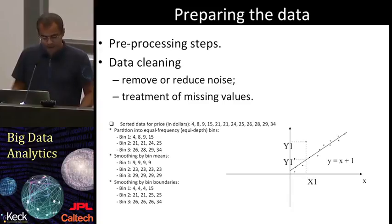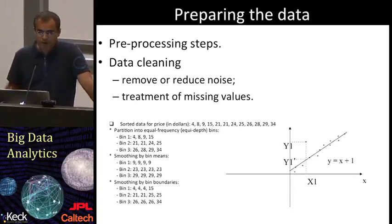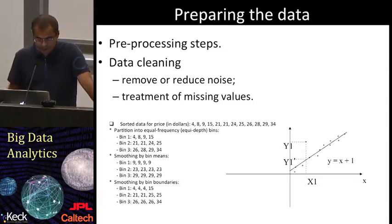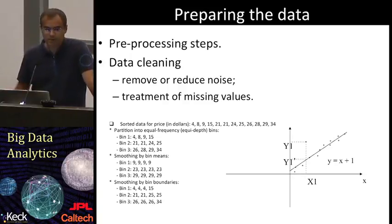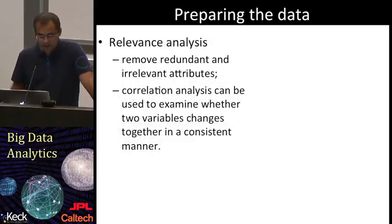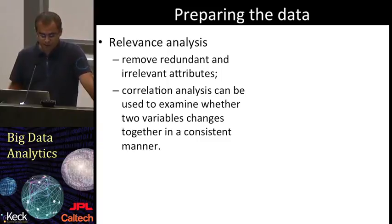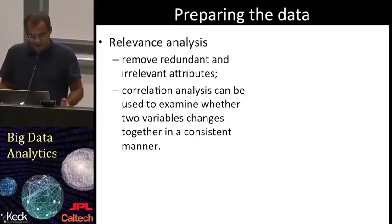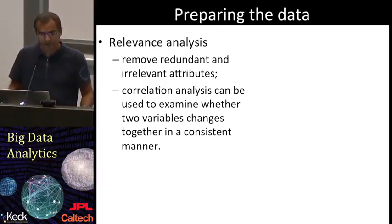For example, data cleaning refers to the task of removing noise, for example by applying smoothing techniques, or choosing how to treat missing values — for example, replacing missing values with the most probable value. Some classification models already have mechanisms for handling noisy and missing data, but this step will still help in achieving better results. We can also perform a relevance analysis and search for redundant and irrelevant attributes that can slow down the process and lead to worse results because they can be misleading. Correlation analysis can be used to identify features that are statistically related — basically, to see if two variables change together in a consistent manner.